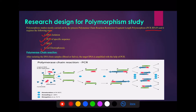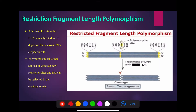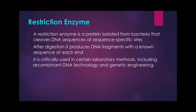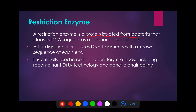Restriction Fragment Length Polymorphism can be detected by amplifying a target DNA region followed by restriction enzyme digestion that cleaves the DNA at a specific site. A restriction enzyme is a protein isolated from bacteria that cleaves DNA sequences at sequence-specific sites. It produces DNA fragments with known sequences at each end. Restriction enzyme digestion is not only used in RFLP technique but is also an important process in recombinant DNA technology and genetic engineering.